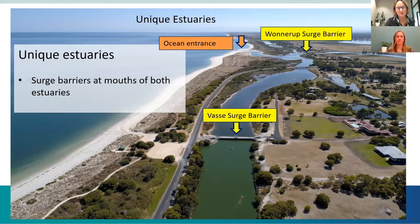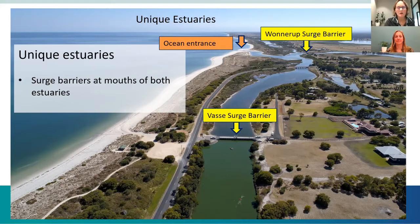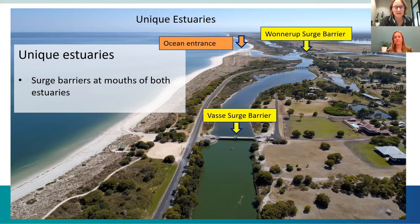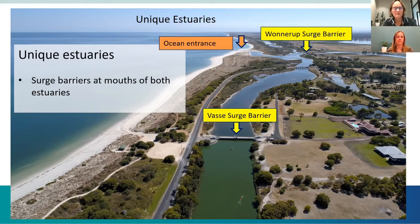The community and scientists have long been aware that many of the water quality problems often tend to focus around these surge barriers. Upstream of the surge barrier we have green pea soup-like water, while downstream you can actually see the bottom — the water is much clearer. So the surge barriers have definitely been implicated in potentially causing those poor water quality issues. As part of this program, we've investigated how the surge barriers are impacting water quality.